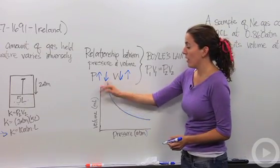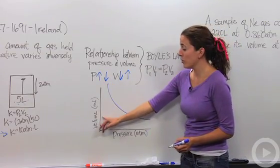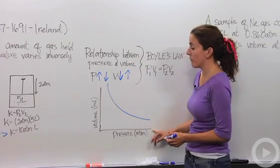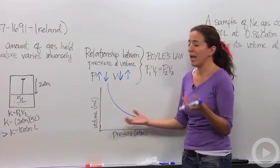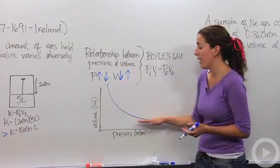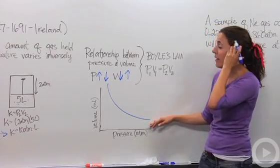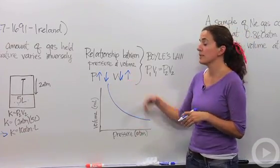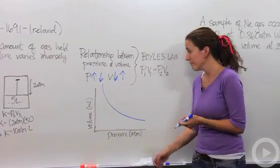Notice that the volume will never reach zero and the pressure will never reach zero. That is because you'll never have a volume that's nothing and we'll never have a pressure that's nothing. So we have a curved graph. Notice it's also a negative slope because our relationship is inverse.